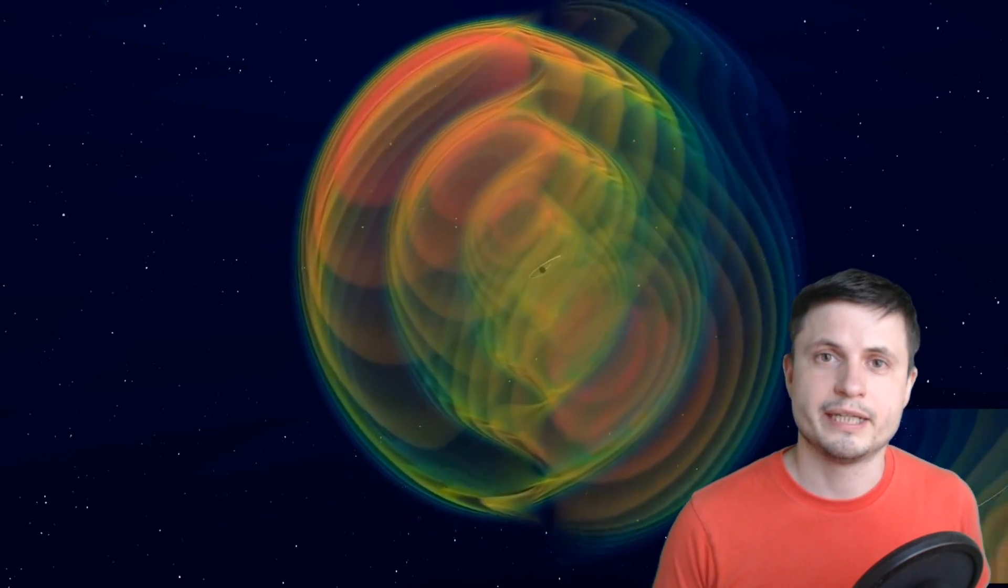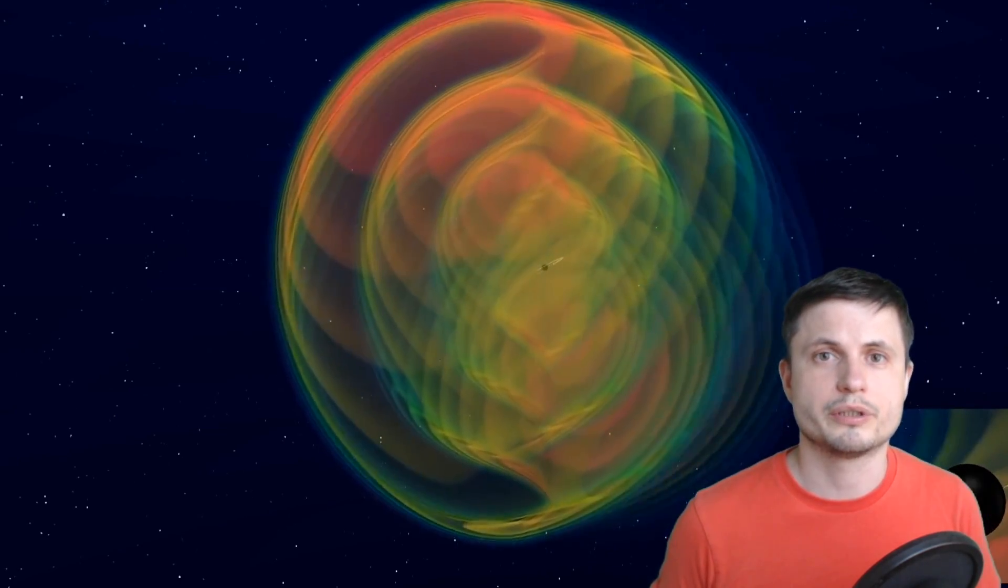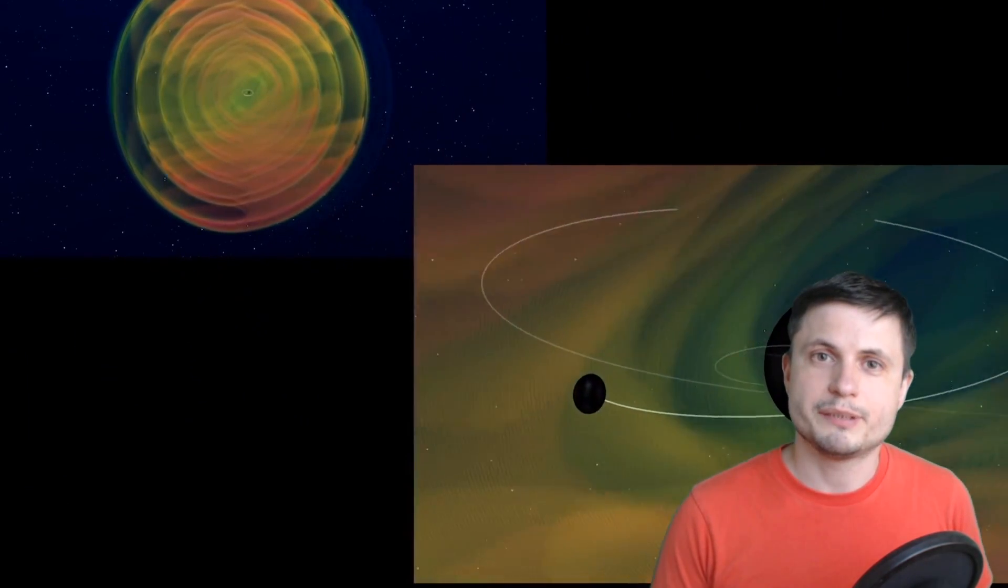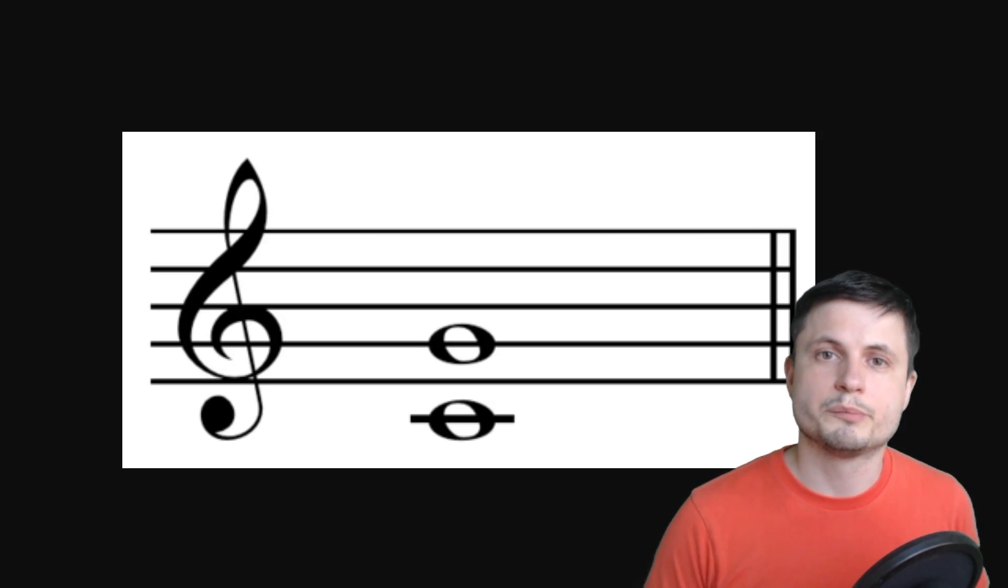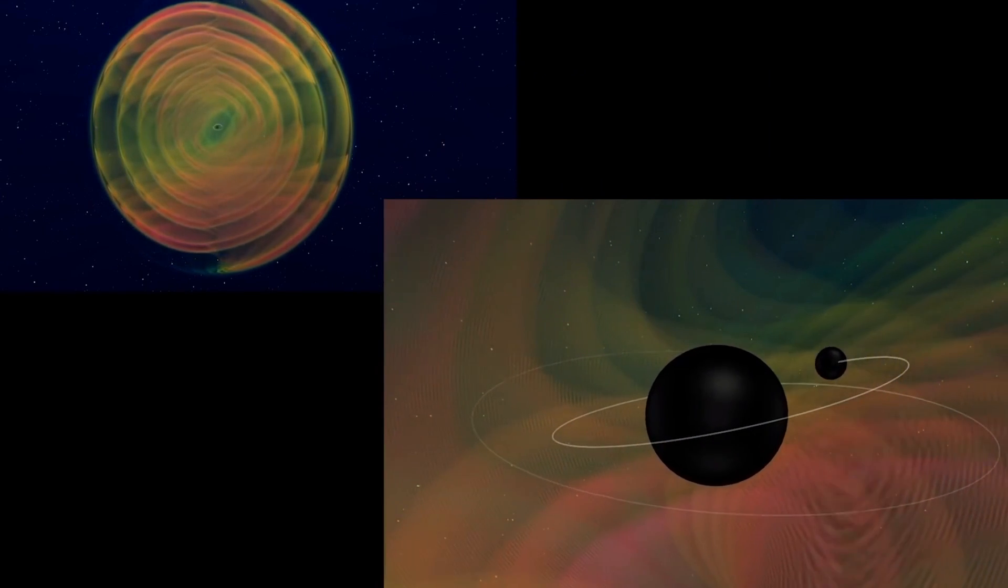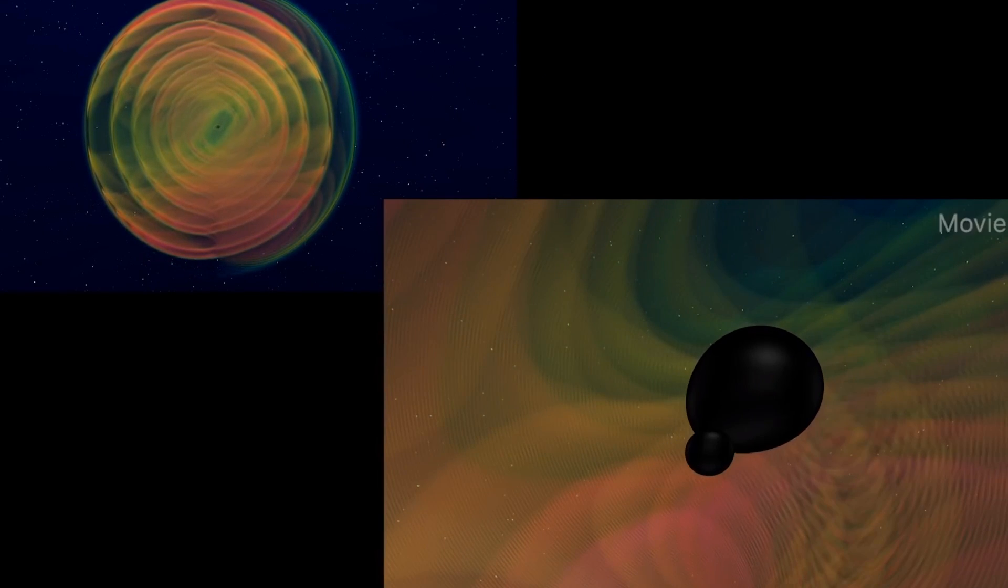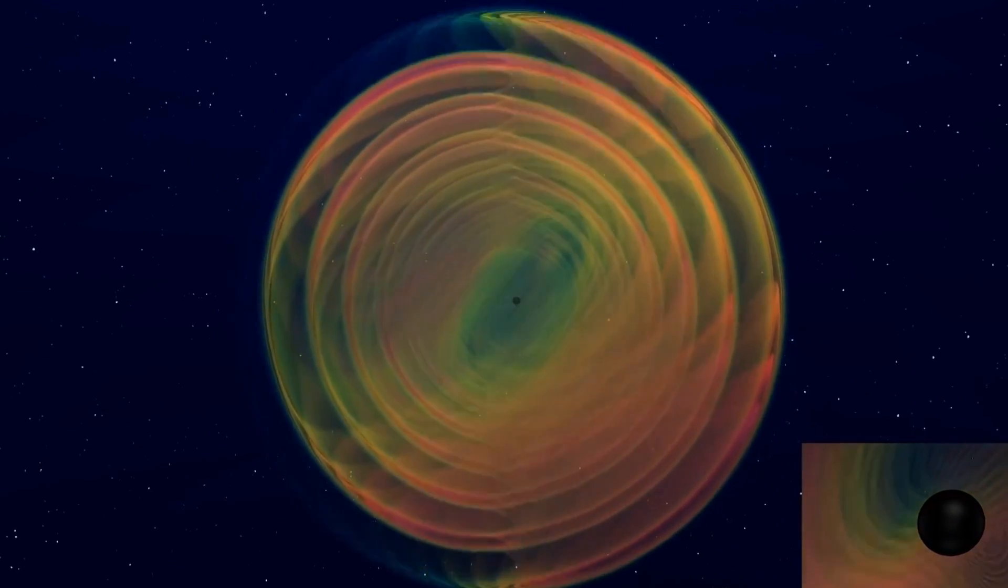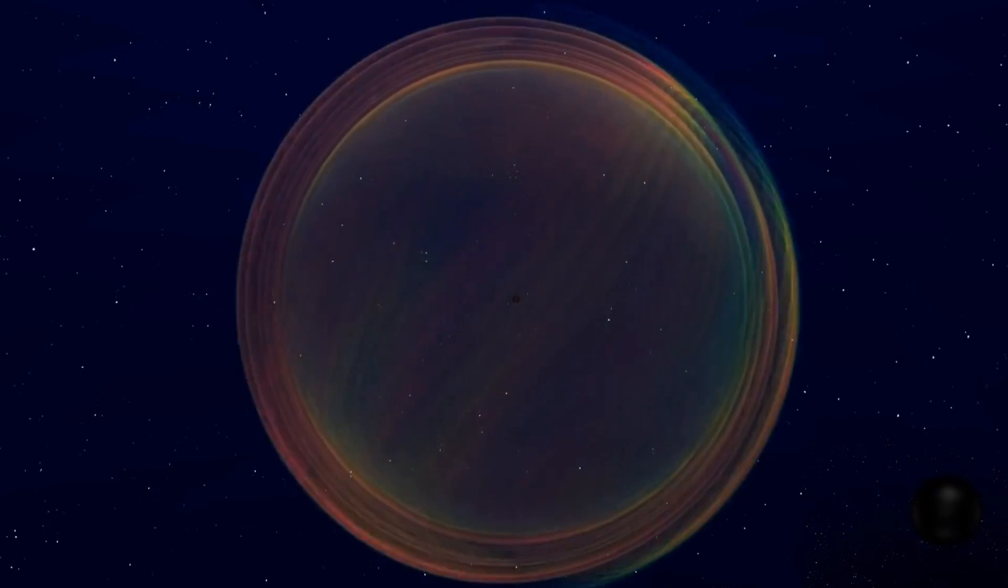The interesting thing here is that the actual waves emitted by these two black holes were different. The best way to describe these waves is music. The waves themselves seem to be creating the so-called perfect fifth harmonic. In other words, there are two different notes being played here, and one of the notes was about 1.5 times slower than the other one. This allowed us to actually study even more things about these two black holes than were previously possible, because it allowed us to identify the spin of the black hole and try to understand where they may have come from and where they collided.